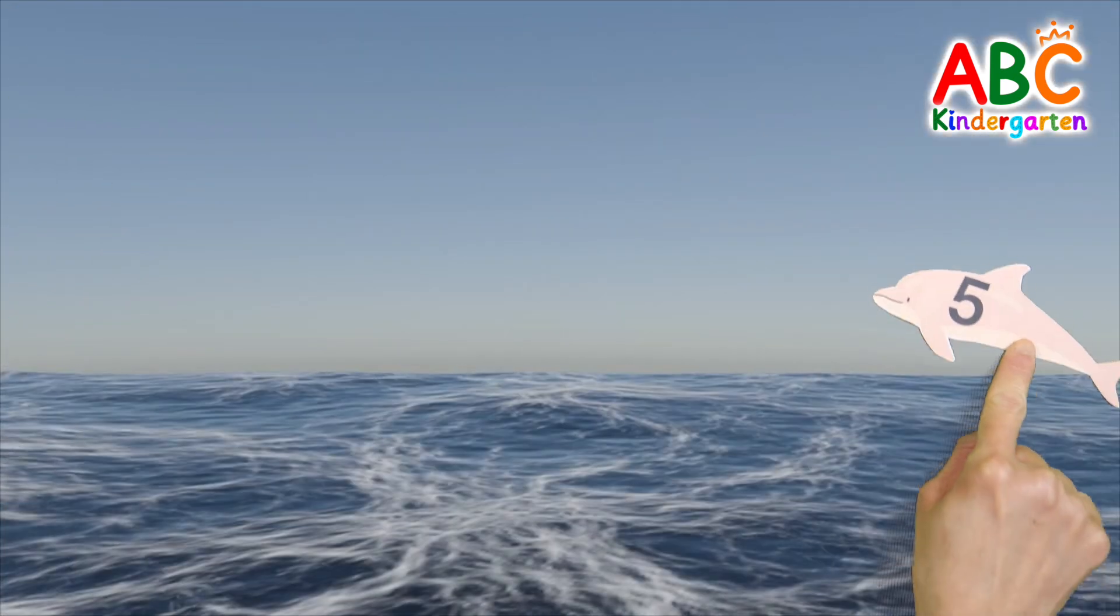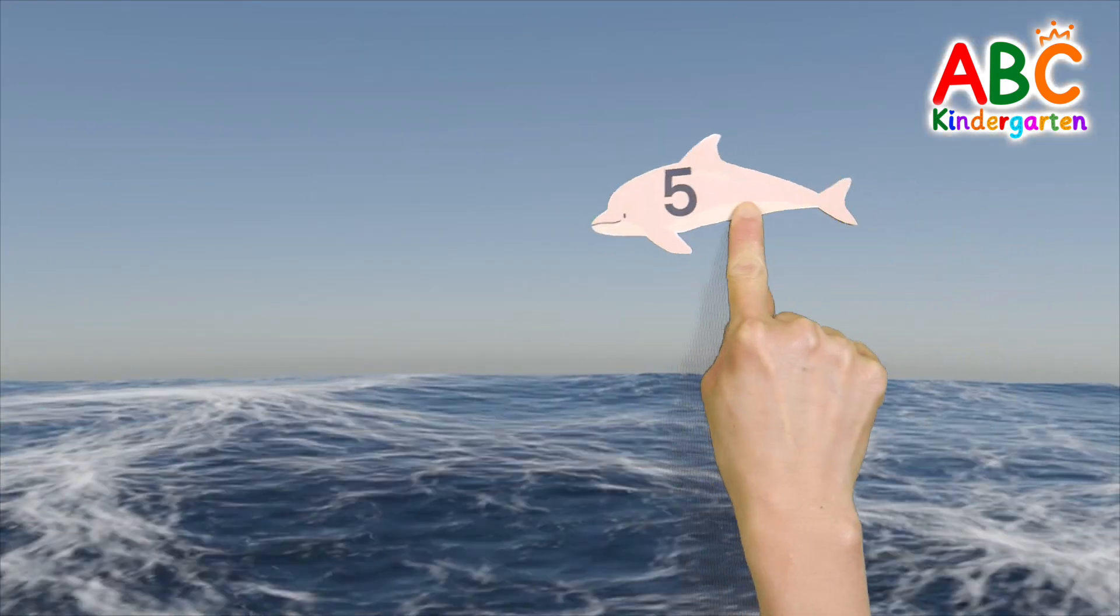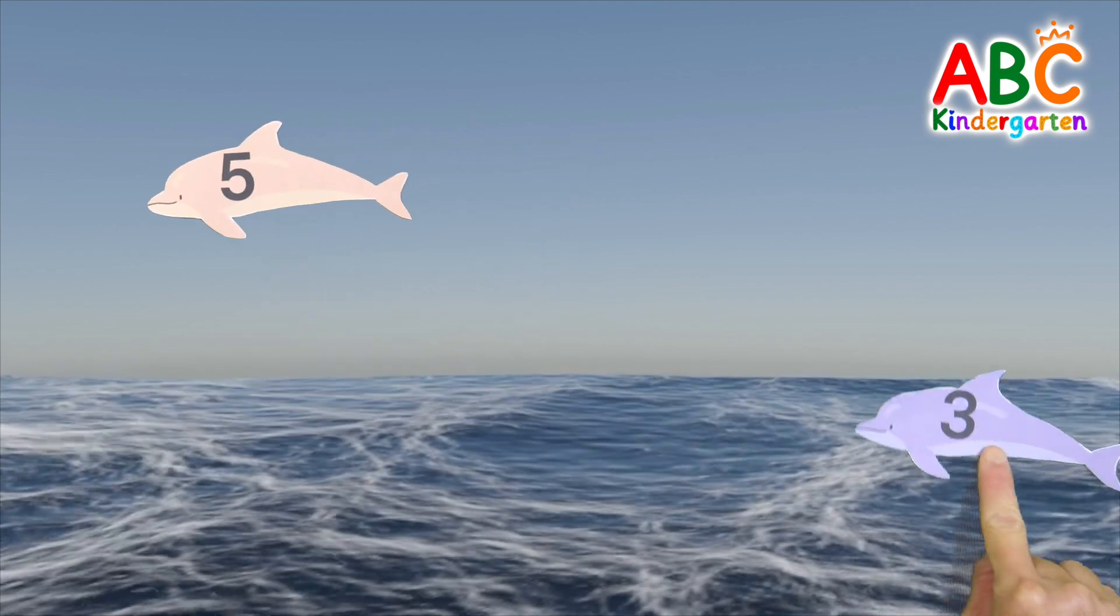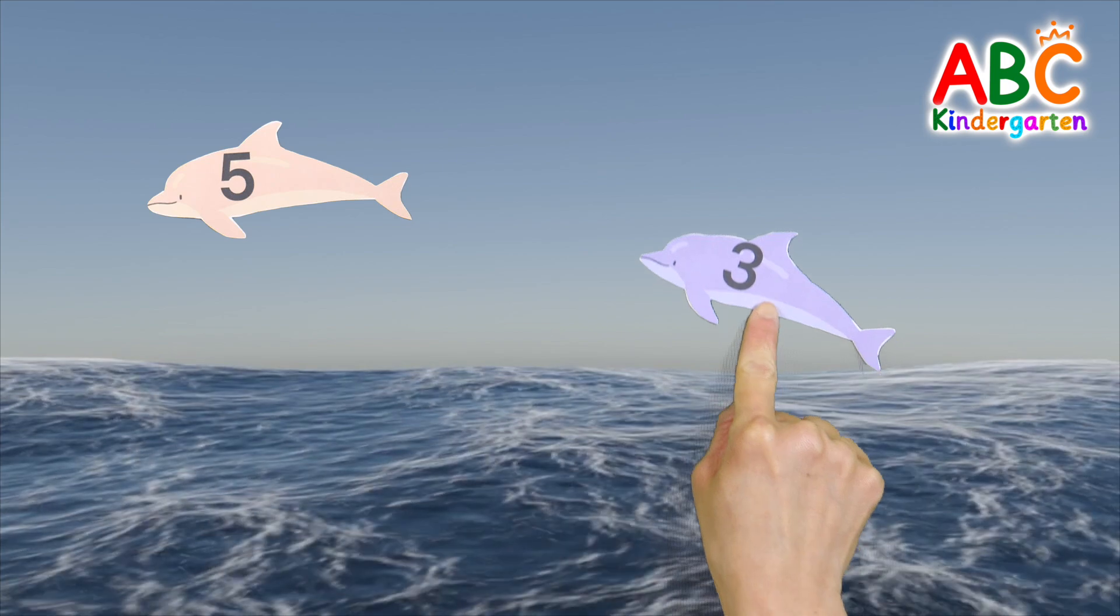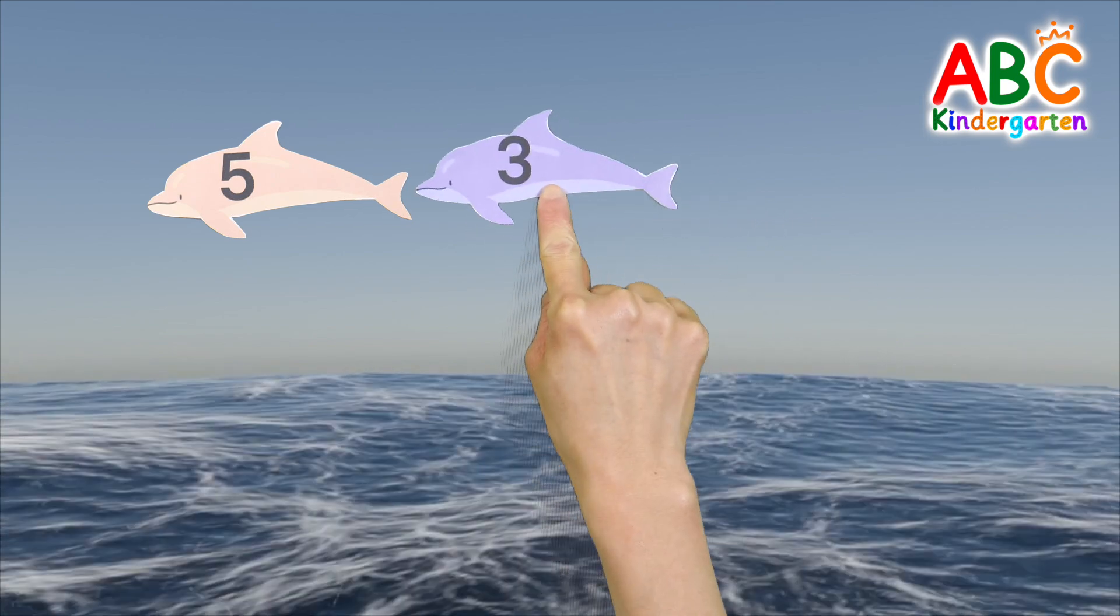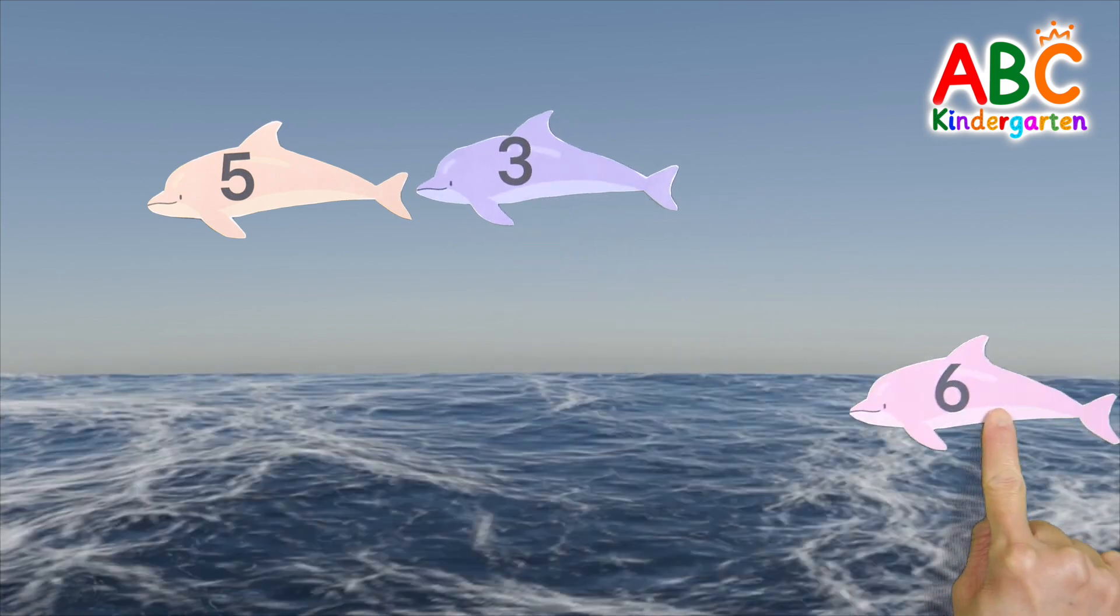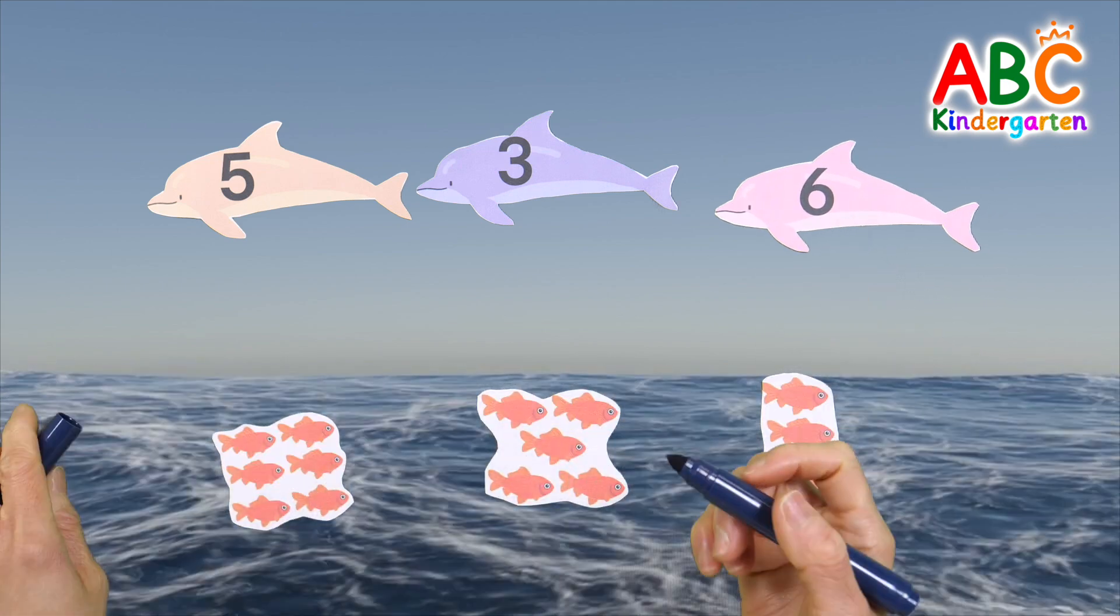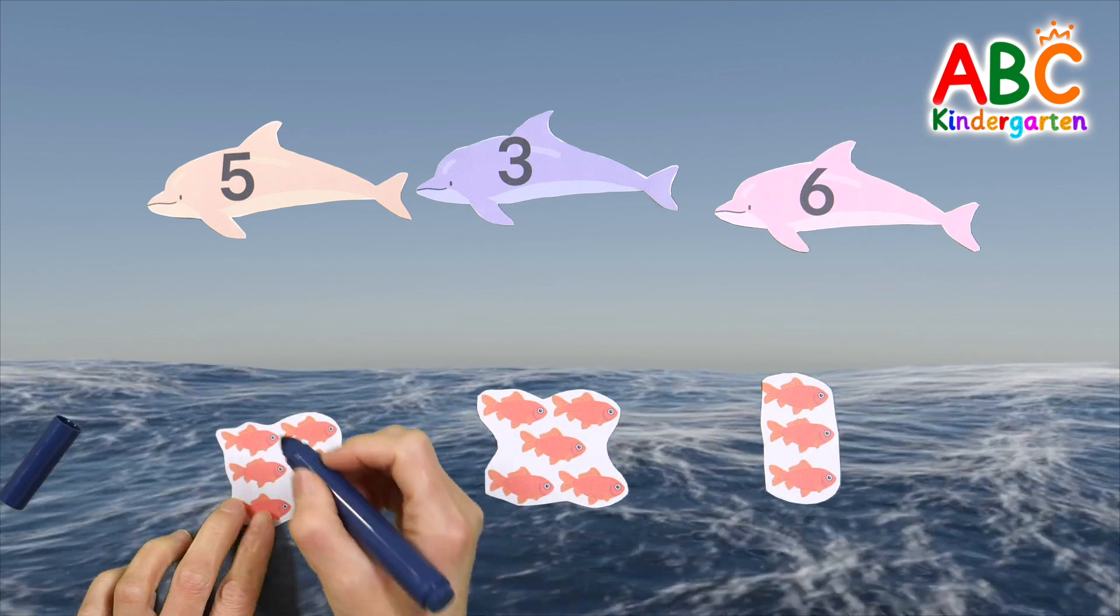It's a wide blue sea. It's a dolphin. Let's learn numbers with dolphins. Let's feed the fish to the dolphins according to the numbers written. Let's write the number of fish and place them in the correct positions.